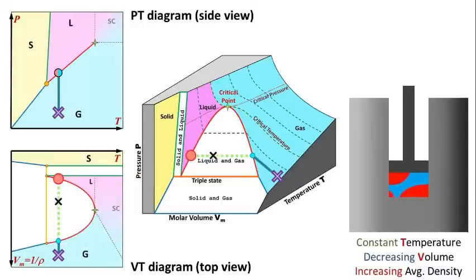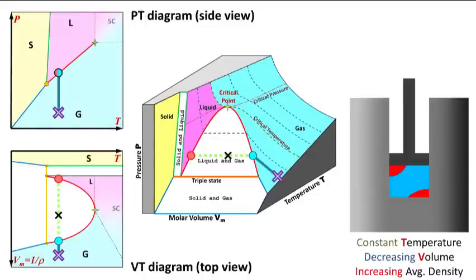Here, if we push the piston down further, the pressure in the container remains constant. What you might call the quote-unquote average density of the material in the chamber, represented by the black X, continues to increase. But the actual densities of the liquid and gas phases don't change. More gas just condenses into liquid. Moving up and down in this gap changes the balance of how much material is liquid or vapor.